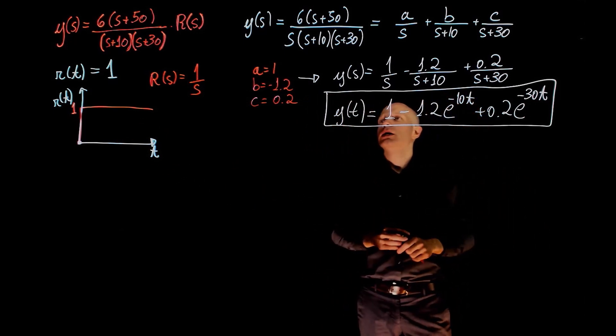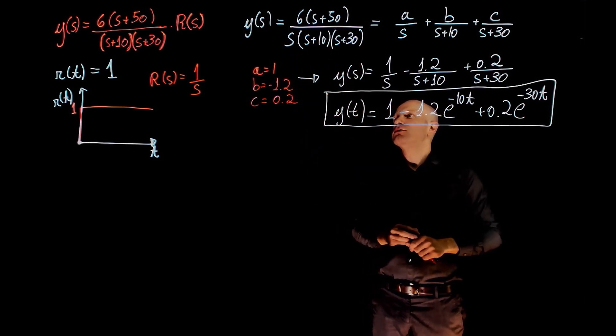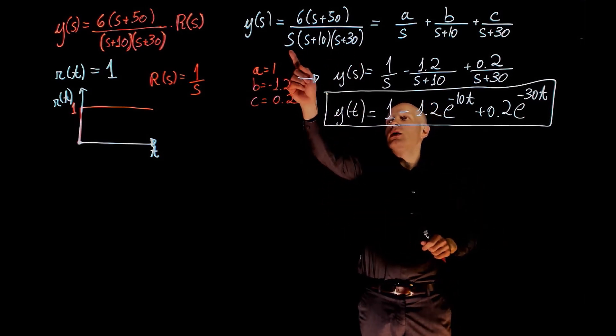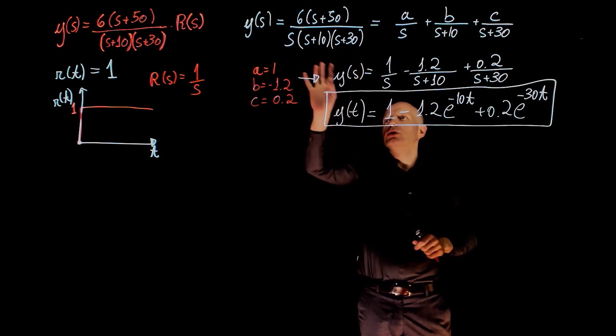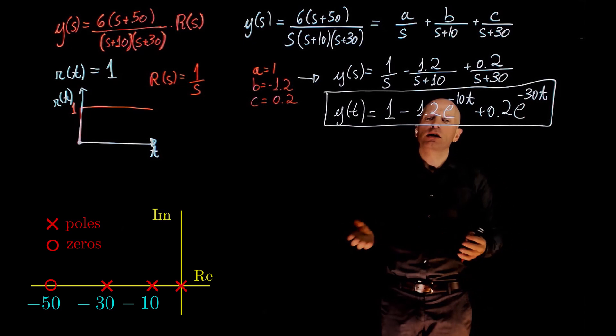Something interesting that we can notice once again is that the denominator of this function in the s domain has poles that are purely real numbers, that's 0, negative 10, and negative 30.